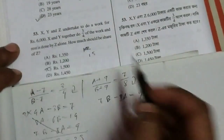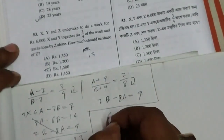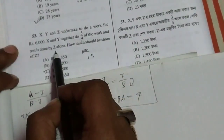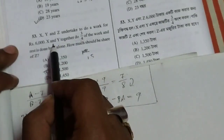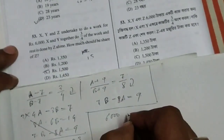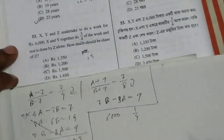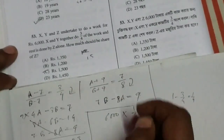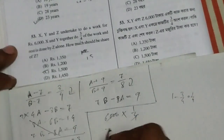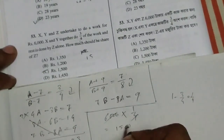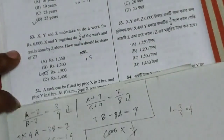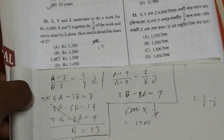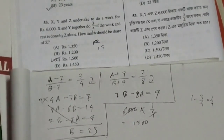X, Y and Z work for Rs. 6000. Since X and Y together do 3/4 of the work, Z does 1/4 of the work. Therefore Z's share is 1/4 of 6000, which is Rs. 1500.